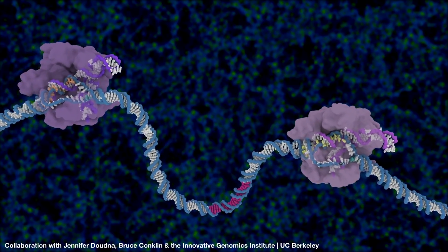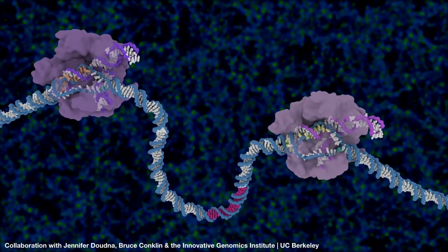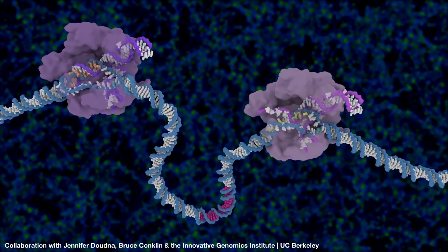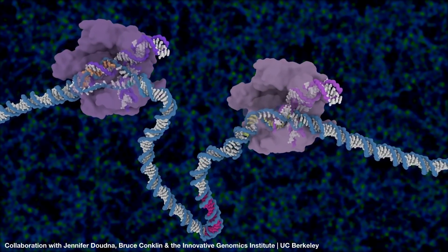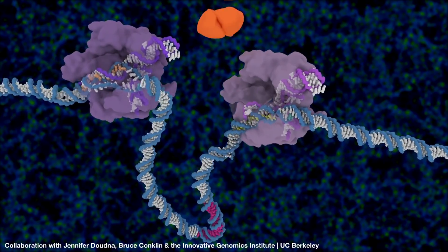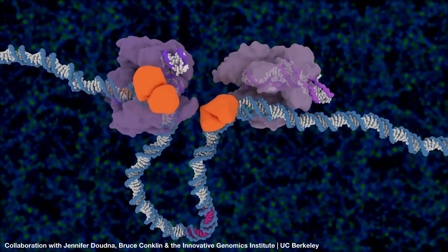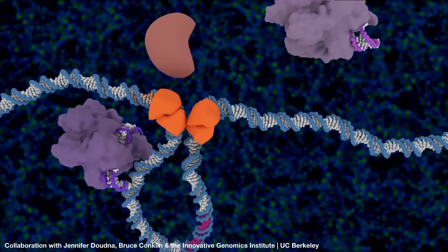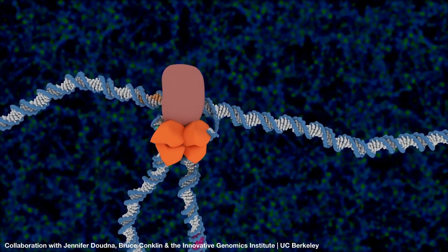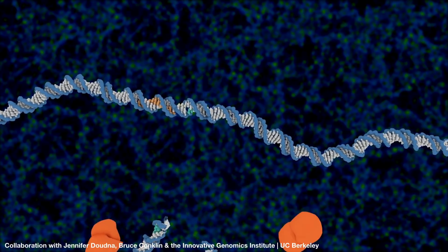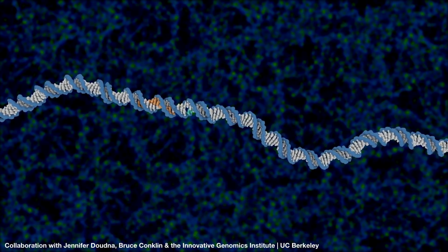In this example, two Cas9 proteins are being used to excise a problematic piece of DNA — for example, a part of a gene that may give rise to a disease. Cellular machinery is then used to basically glue the two ends of the DNA back together.